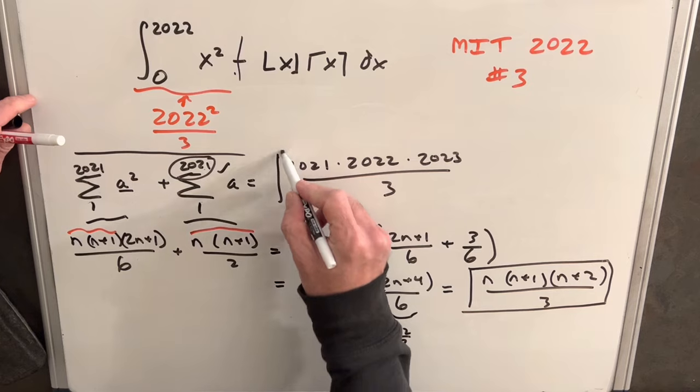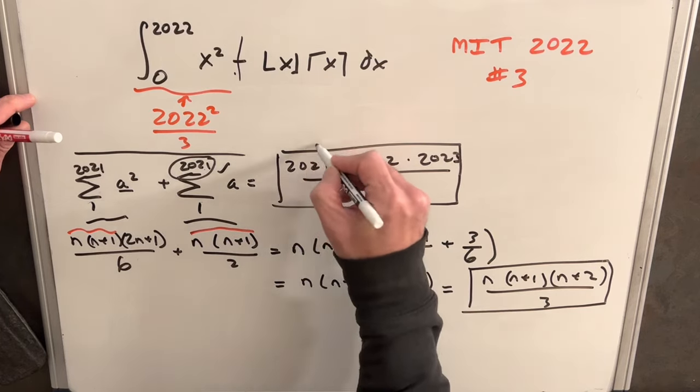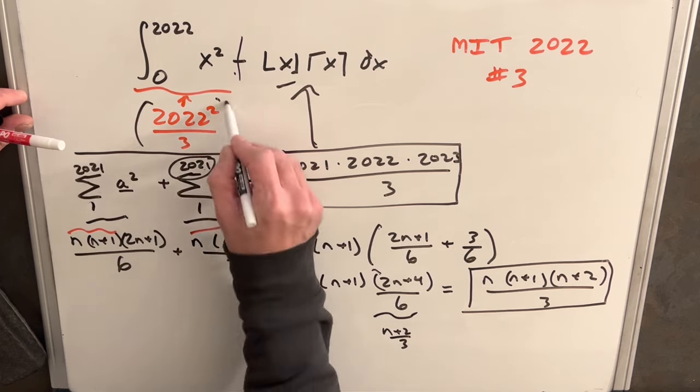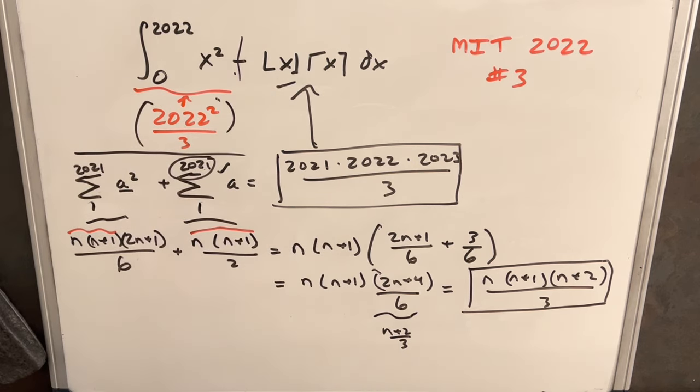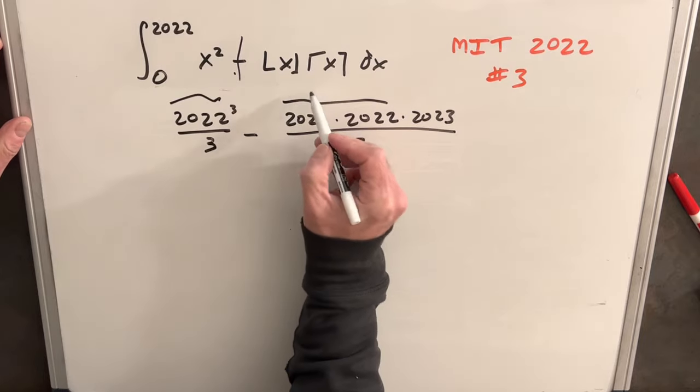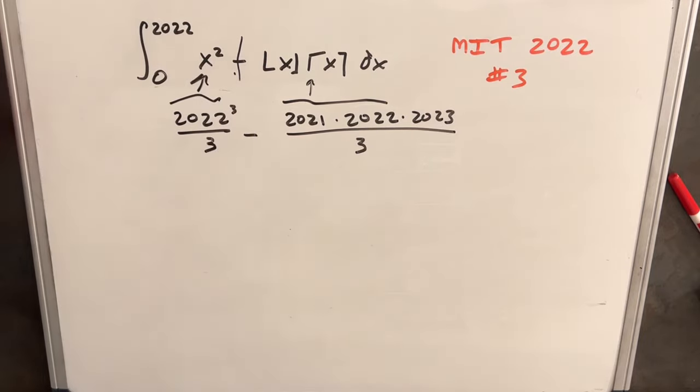This is our value for the second integral. Now let's see if we can combine our first piece and second piece to get simplification. From our integrals, we have our two values for each of our separate integrals. We just want to see if we can clean this up a little bit.